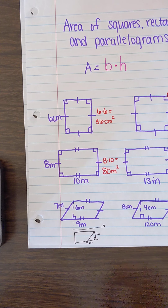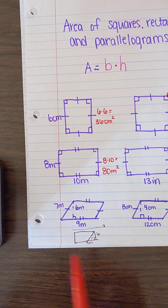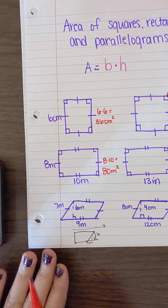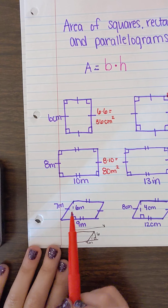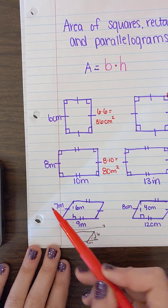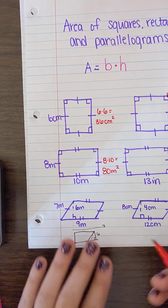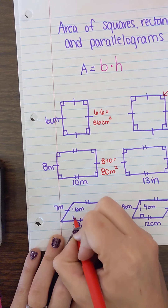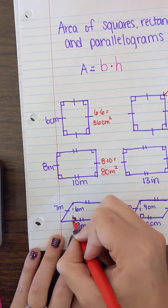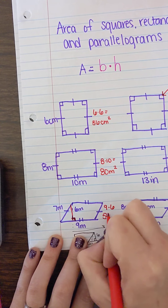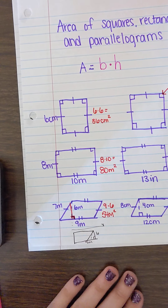Parallelograms can be moved around. We have to be careful when looking at parallelograms because we want to focus on that right angle — it will always tell us where our base and height are. Parallelograms have a slanted side; we do not want to use that one. The base is 9, the right angle connects base to height, so 9 times 6 gives us 54 meters squared.